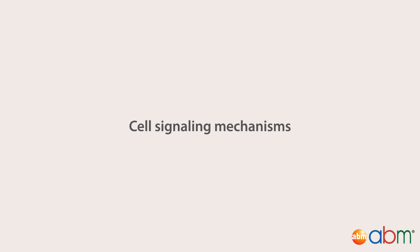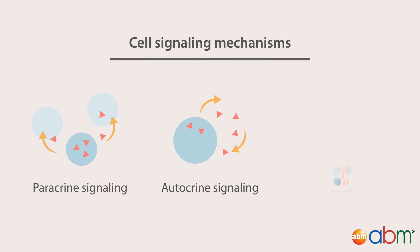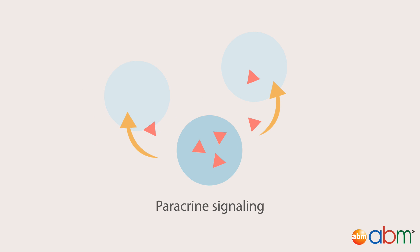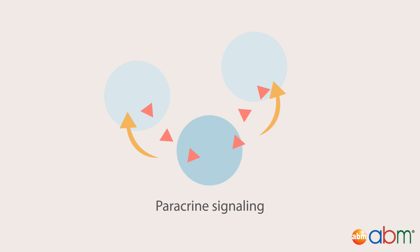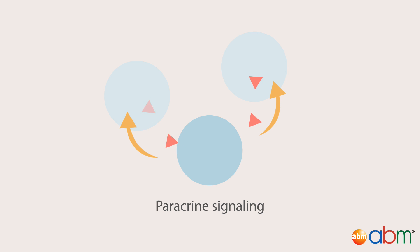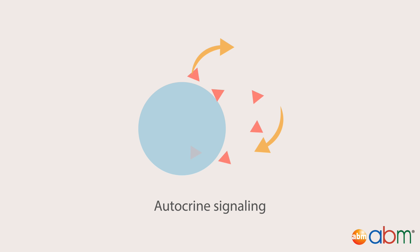There are several different signaling mechanisms a cell uses to best suit its purpose. Paracrine signaling occurs between neighboring cells where the signals elicit quick responses and last only a short while due to the degradation of the paracrine ligands. In autocrine signaling, a cell signals itself through a component that it synthesizes, leading to a biological response within the same cell.